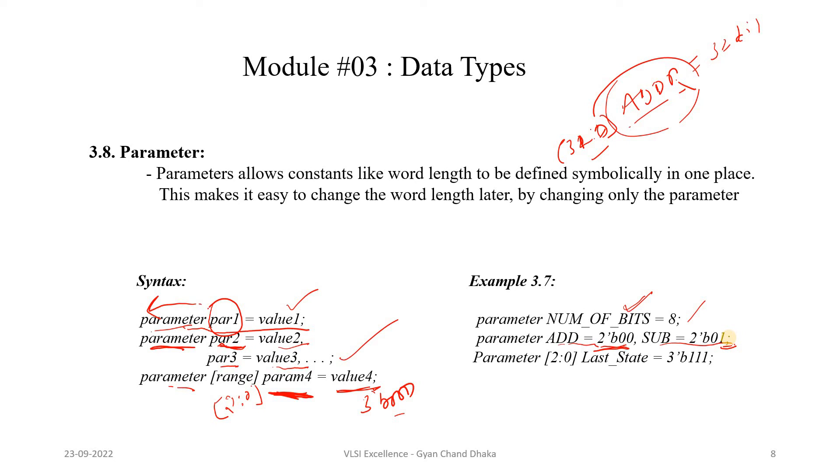We can also declare a parameter in bit format when the LAST_STATE is nothing but a 3-bit variable—a 3-bit parameter, not a variable. It is a parameter which has the fixed constant value. It is a 3-bit constant value and the constant value is nothing but 3'b111.